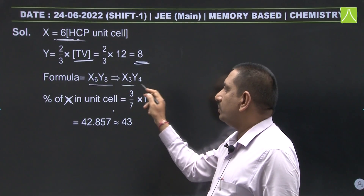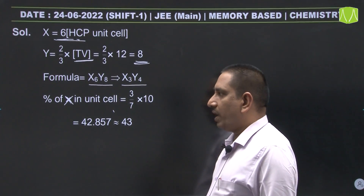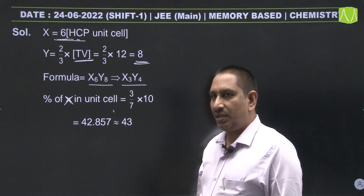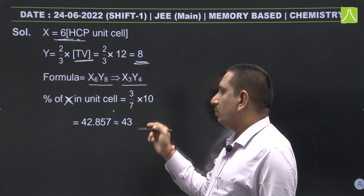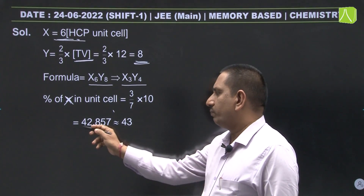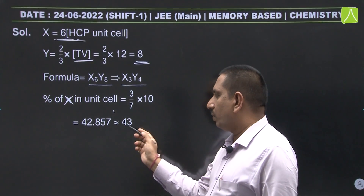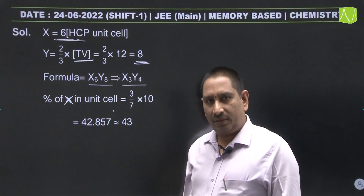The percentage of X in the unit cell is 3/7 × 100 = 42.857. Rounded to the nearest integer, it is 43. This is an integer type question.